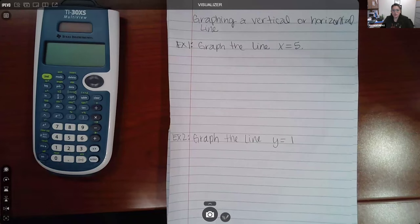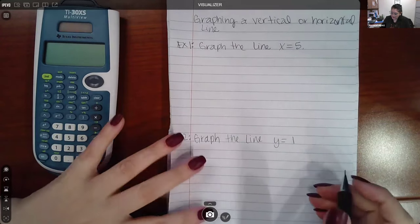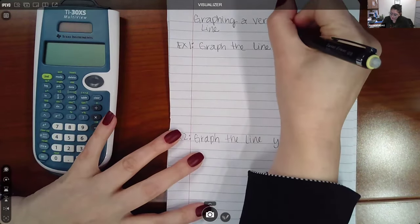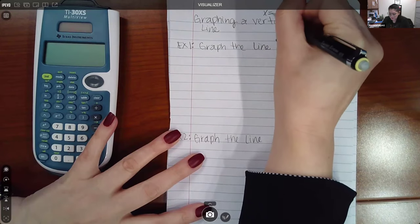In this topic, we're going to be doing graphing a vertical or horizontal line. Two things we need to know is just that a vertical line will always be of the form X equals a number.